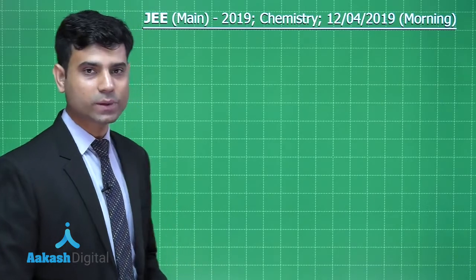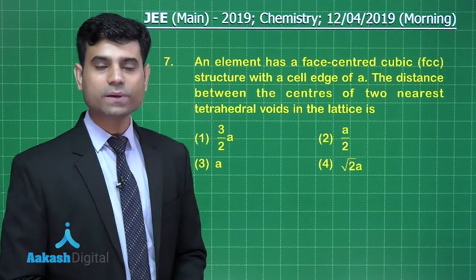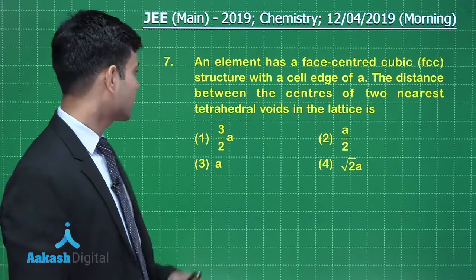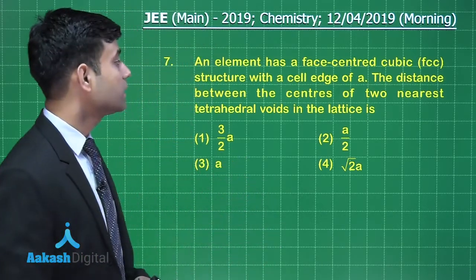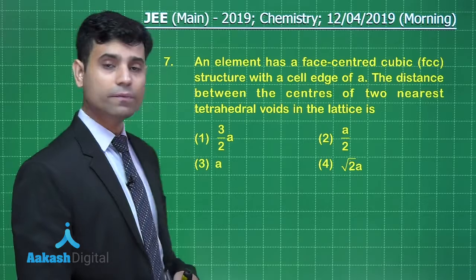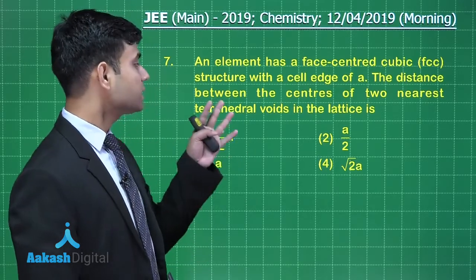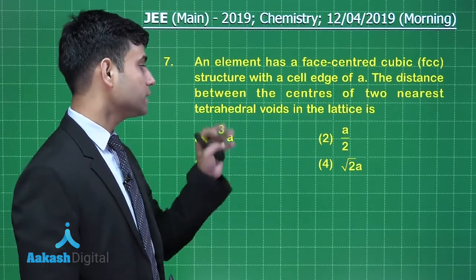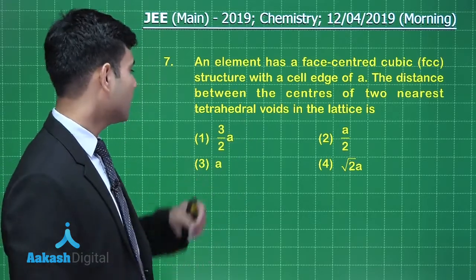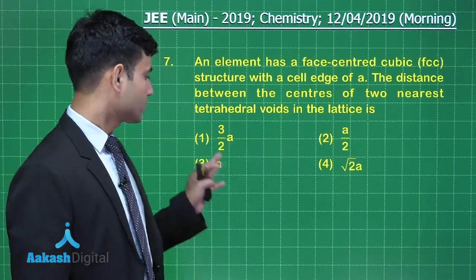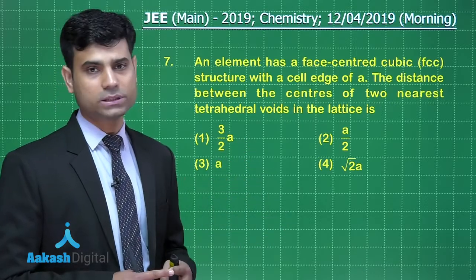The next question says: an element has a face-centered cubic structure with a cell edge of 'a'. The distance between the centers of two nearest tetrahedral voids in the lattice. The options are: (1) √3/2 · a, (2) a/2, (3) a, (4) √2 · a.